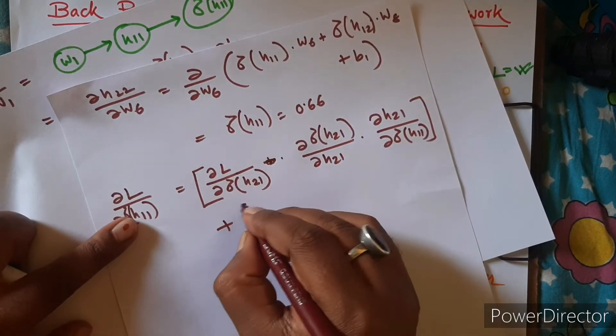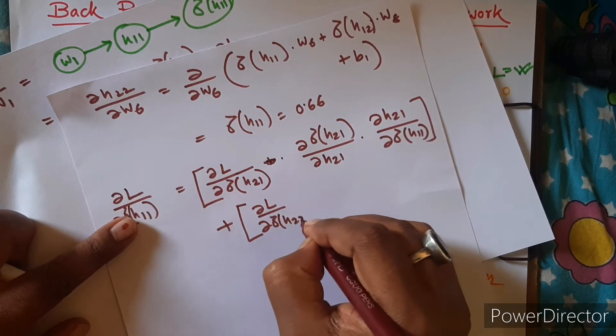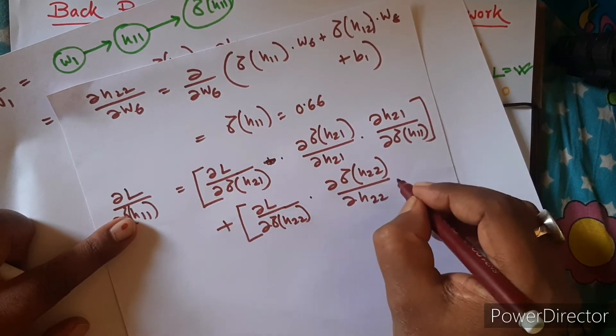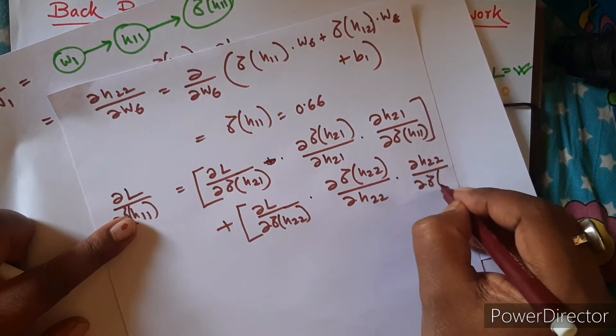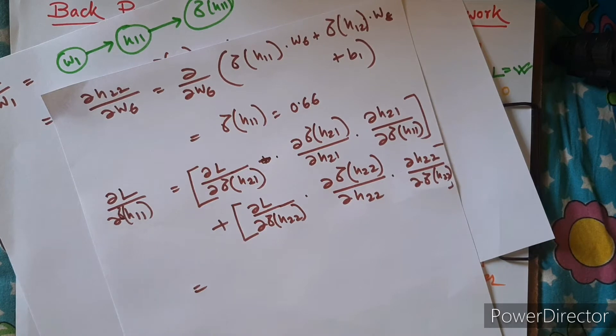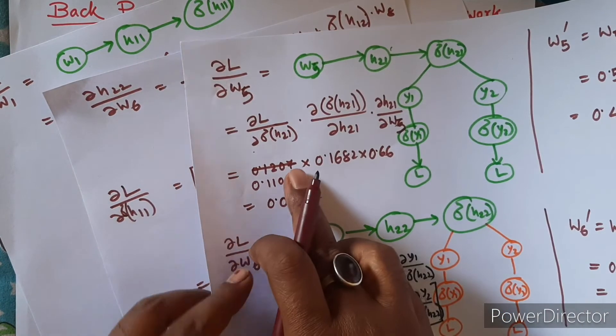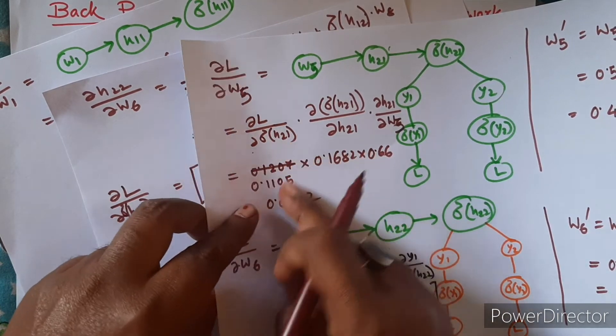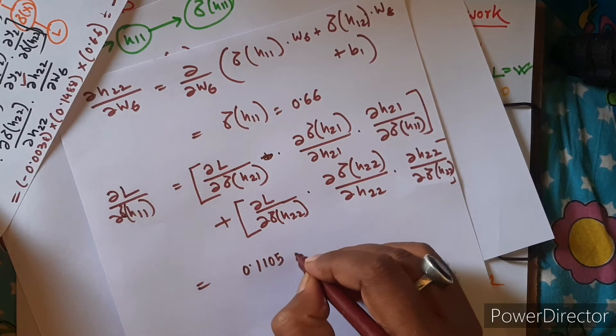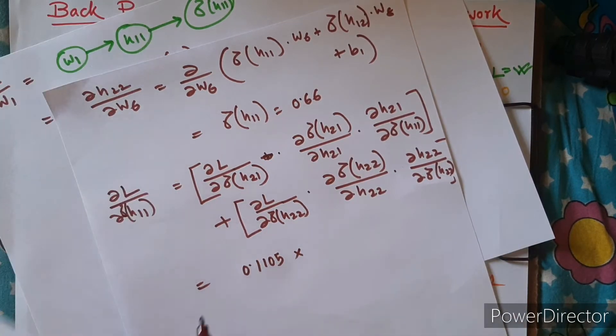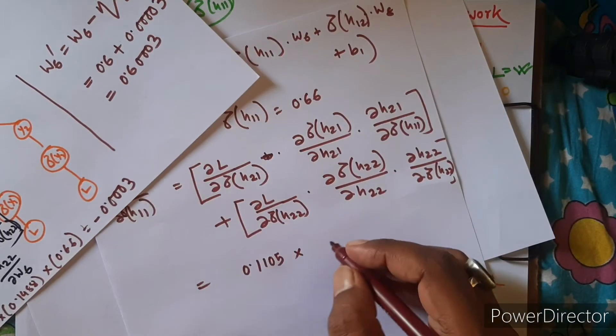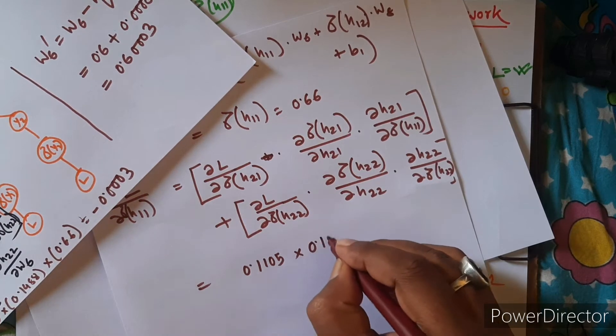It is going to H21, and the same way it will go for H22. Do you know any of this? Yes, we calculated it in the last layer, right? The derivative of L with respect to H21 is actually 0.1105, so this is directly 0.1105. This one you know, you have already calculated. So this part will be 0.1682.